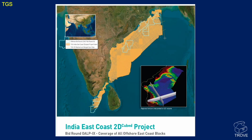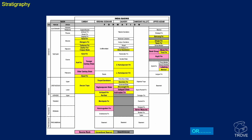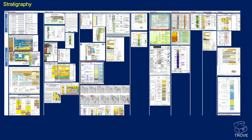If you're looking at the east coast of India, a great place to start is with TGS's 2DQ project. This was prepared for the bid round — the OALP 9 — and it's a coverage of all the offshore east coast blocks. Perhaps you also want to look at stratigraphy for many different basins. You can find regional stratigraphic columns and correlations in Trove, per basin and by country, to make sure you've got all the stratigraphic information at your fingertips.